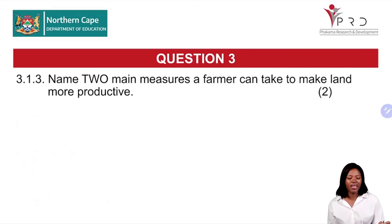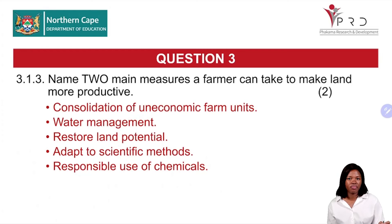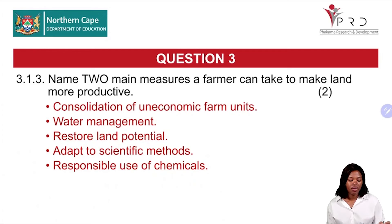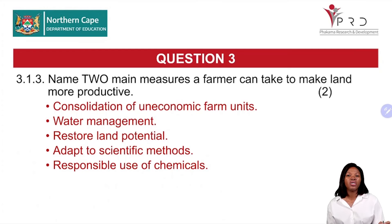Question 3.1.3: Name two main measures a farmer can take to make land more productive. Firstly, consolidation of an economic farm unit — combining small farm units into a single large farm unit that is economical makes management easier. Other measures include water management, restoring land potential, adopting scientific methods, improving transport, and the responsible use of chemicals.